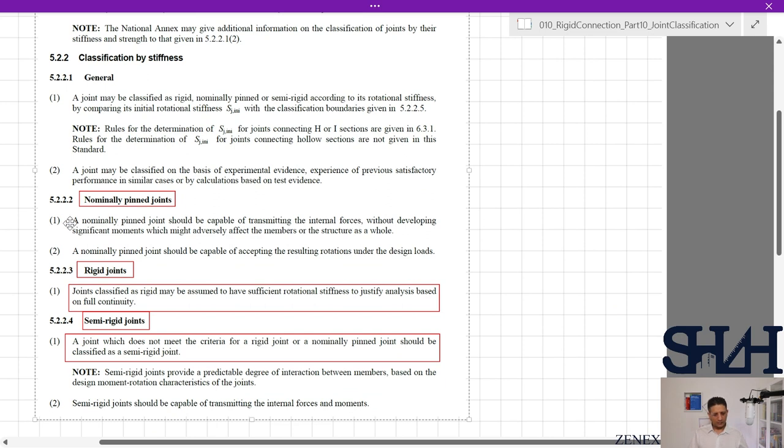If you go down, you will see that we have nominally pinned joints. A nominally pinned joint should be capable of transmitting the internal forces without developing significant moments which might adversely affect the members or the structure as a whole. A nominally pinned joint should be capable of accepting the resulting rotations under the design loads.